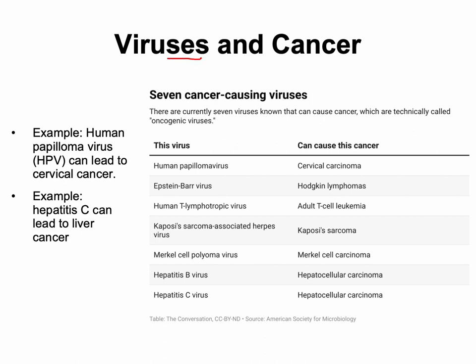Because viruses are so closely tied to host cell replication and metabolic machinery, they can potentially cause cancer. Viruses that increase the likelihood of developing cancer are called oncogenic viruses. Examples include human papillomavirus (HPV), which can increase the chances of developing cervical cancer, and hepatitis C, which can lead to liver cancer. I won't ask specifically which virus causes which cancer — just be aware that oncogenic viruses exist.